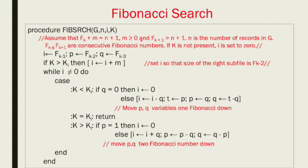This is the algorithm. We set up three variables: I, P, and Q. I is initialized to FK-1, which is 21. P is FK-2, which equals 13. Q is FK-3, which equals 8. These variables track our position in the Fibonacci sequence as we traverse the search tree.